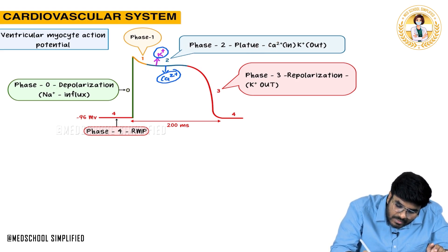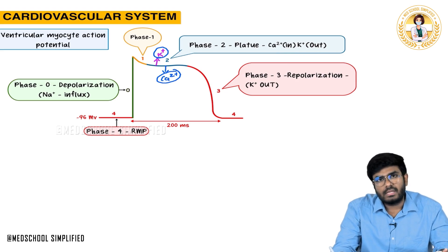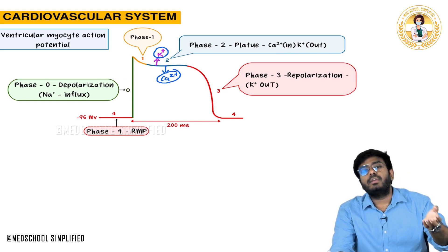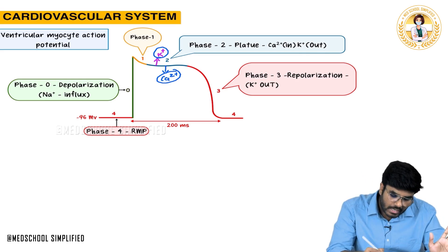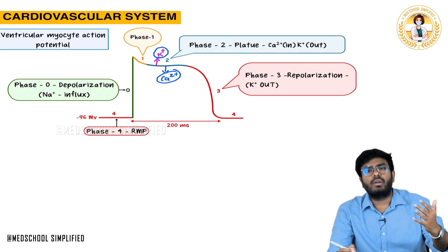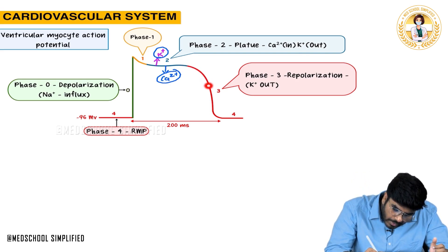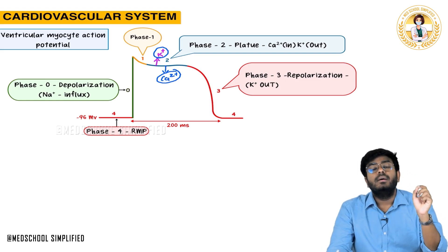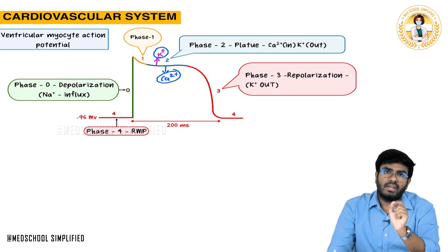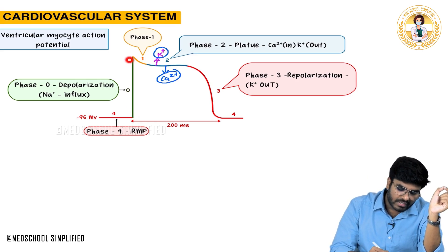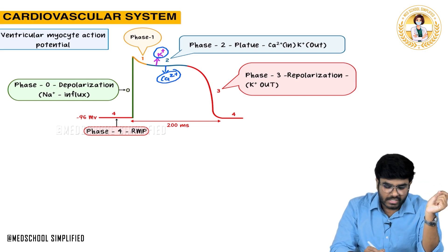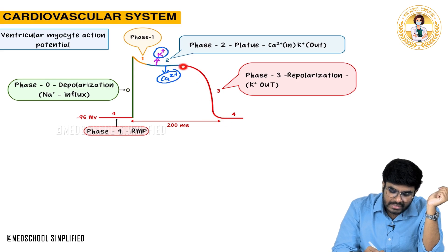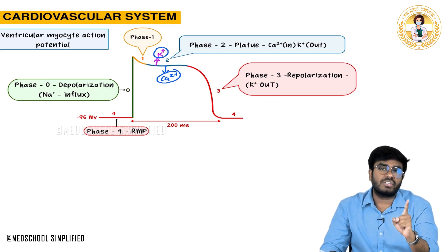Phase two is a plateau phase where calcium influx and potassium efflux occur simultaneously. Later, calcium entry into the cell also decreases, while potassium efflux continues — bringing the membrane potential back down to resting. The four important phases are: phase 4 (resting membrane potential), phase 0 (depolarization), phase 1 (initial repolarization), phase 2 (plateau), and phase 3 (repolarization). Repolarization is always because of the efflux of potassium.